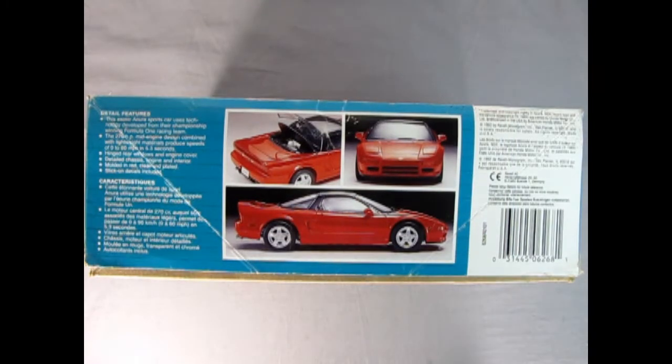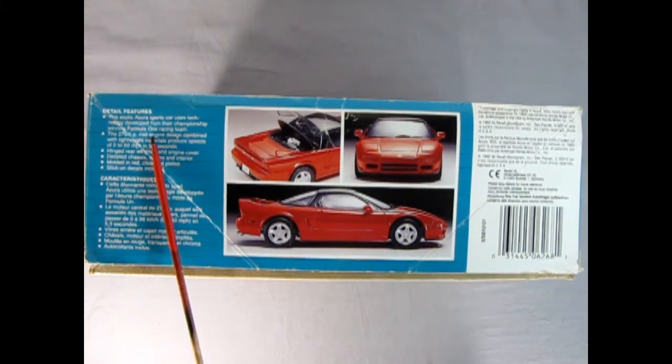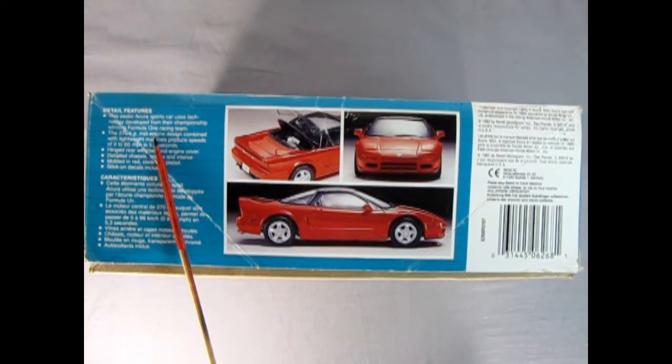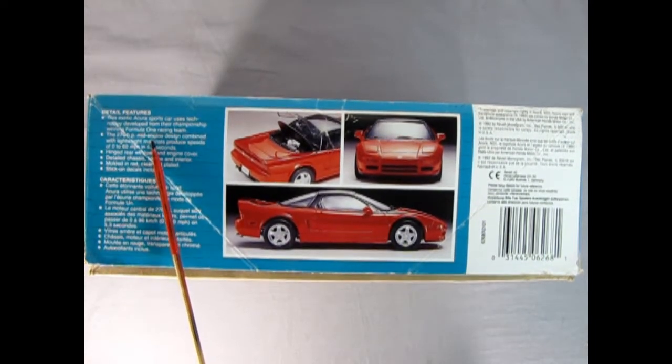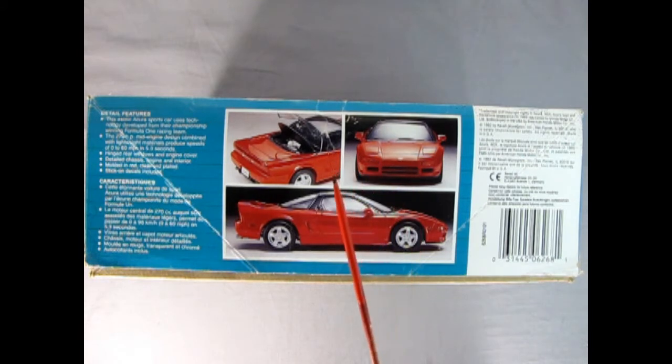On this side of the box we get the detail features. This exotic Acura sports car uses technology developed from their championship winning Formula One race team. That's pretty cool. It's got the engine in here, detailed rear window, detailed chassis, molded in red with clear and plated parts. Stick-on decals or stickers are included.